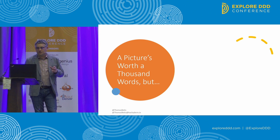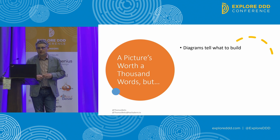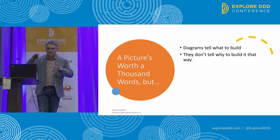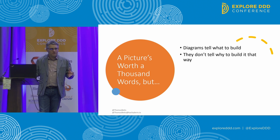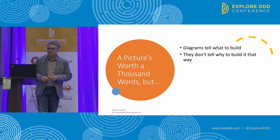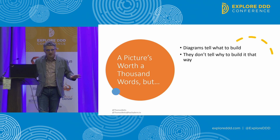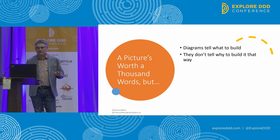Diagrams are useful because they show what to build. But critically, what they leave out is why you think it should be built that way. We went through this whole decision-making process, evaluated multiple options, and chose one — the diagram only shows the winner. Imagine watching the Olympics and the only coverage you see is the gold medals; you don't get to see any of the other athletes or any of the competition.